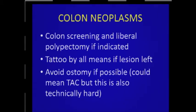Colonic neoplasms: you can colonoscope a severely obese patient just like a normal weight patient, so you want to be aggressive and liberal with polypectomies and multiple colonoscopies rather than surgery if at all possible. If you get a polyp you can't remove with multiple attempts, tattoo it well and then go after it operatively. If you do have to take out significant colon, try to avoid an ostomy — maybe even a total abdominal colectomy, which is technically a little easier to hook up the rectosigmoid to the ileum rather than anastomosing in the mid-abdomen.